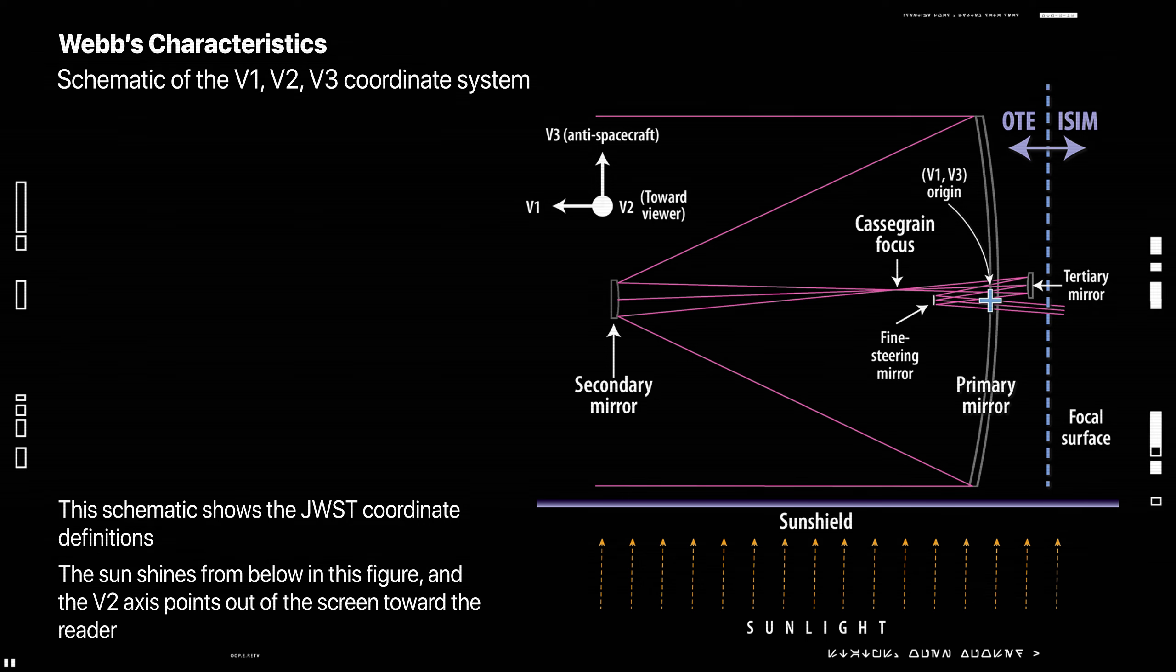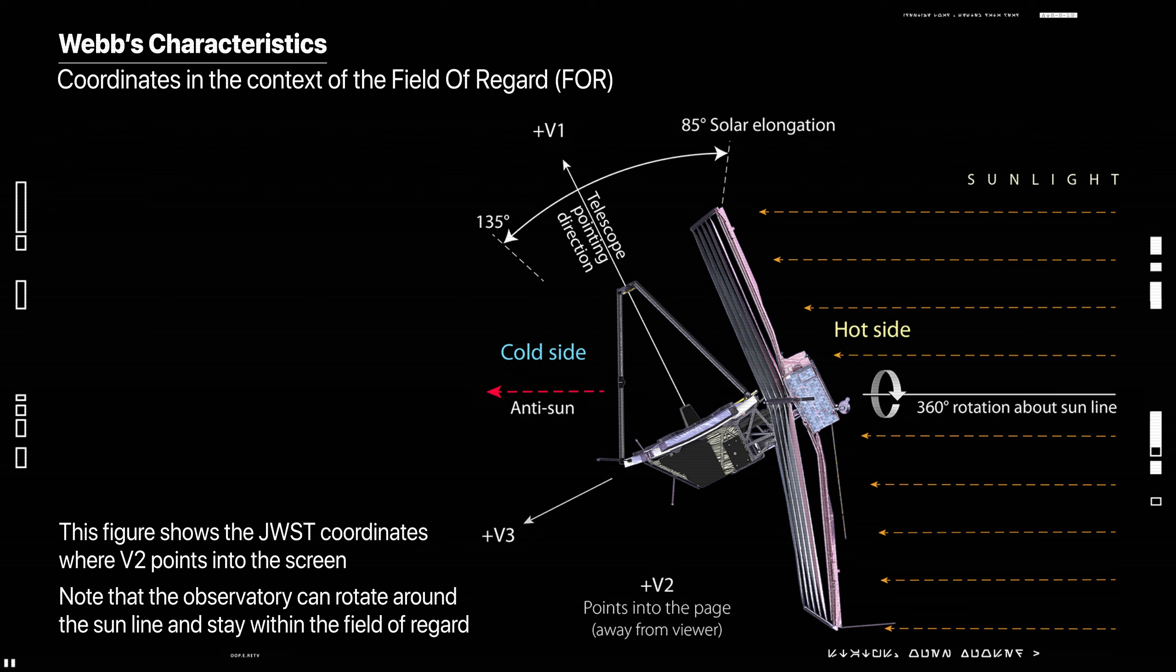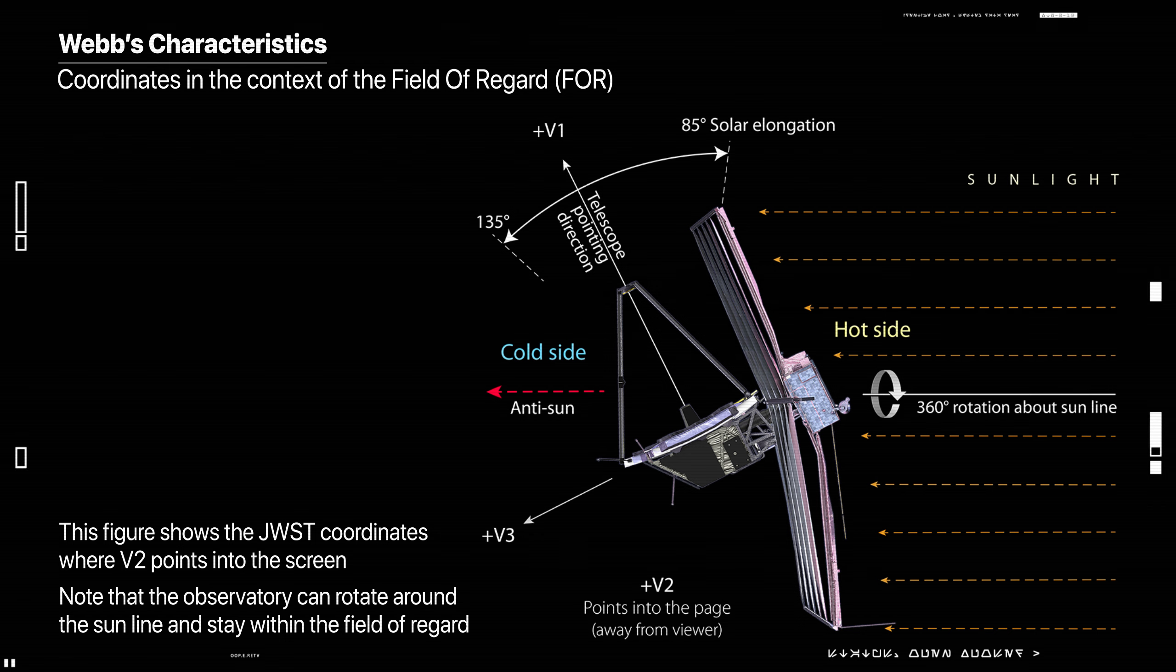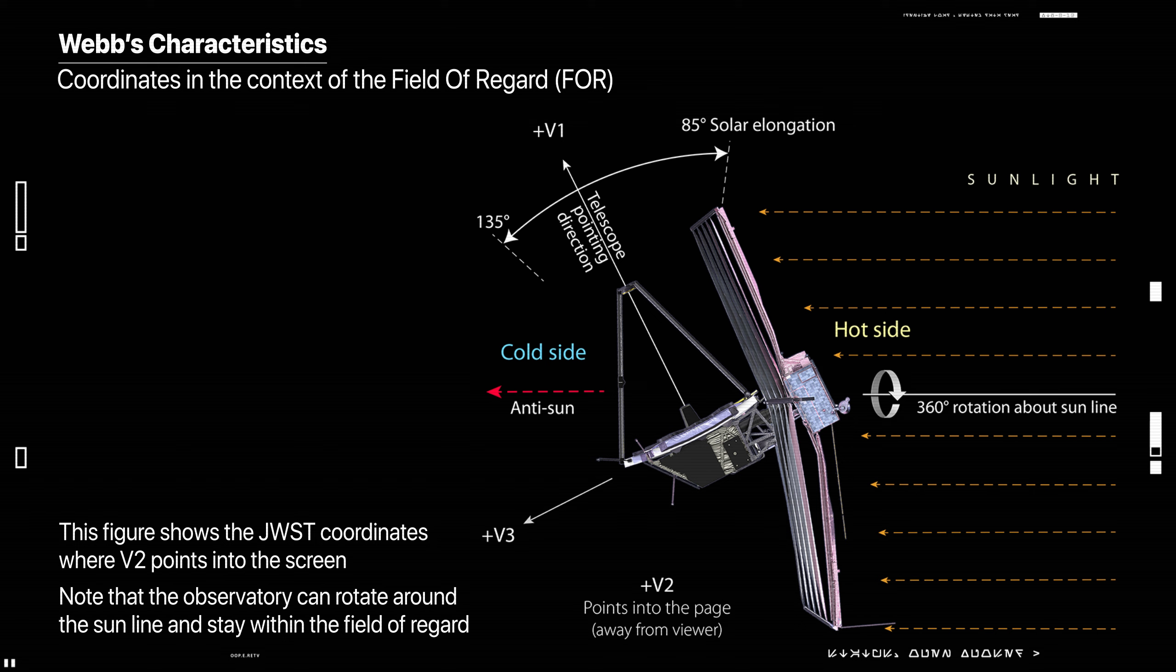Here the James Webb coordinate system is shown in the context of the field of regard. If the observatory is pointed at 90 degrees solar elongation, the V3 axis points towards the anti-sun, but as the bore side points elsewhere in the FOR, V3 moves away from the anti-sun direction.